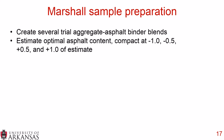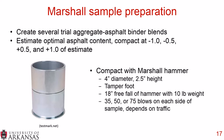For Marshall sample preparation, you first create several trial aggregate asphalt binder blends. You then estimate the optimal binder content and compact at -1%, -0.5%, +0.5%, and +1% of the estimate. You compact with the Marshall hammer, producing a 4-inch diameter sample, 2.5 inches in height. It uses a tamper foot with an 18-inch free fall of a 10-pound hammer weight, and you do either 35, 50, or 75 blows on each side of the sample. The number of blows depends on the traffic level.